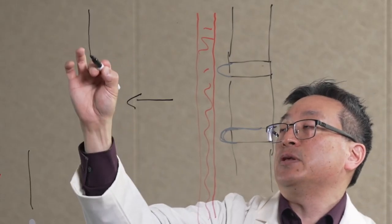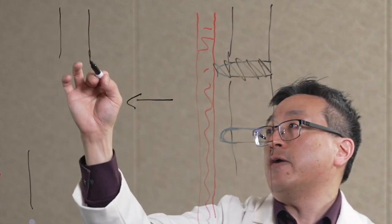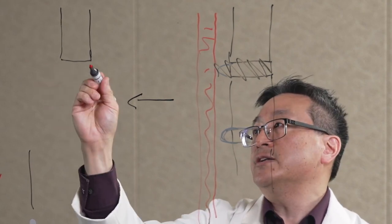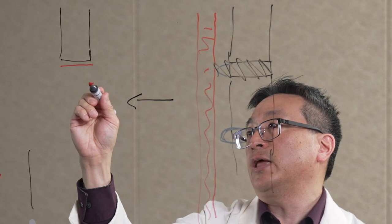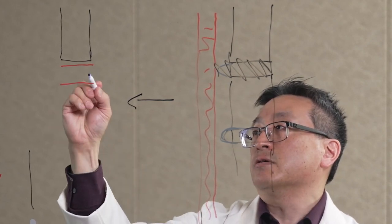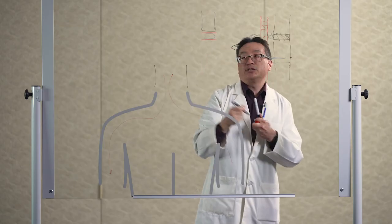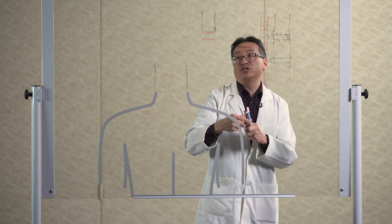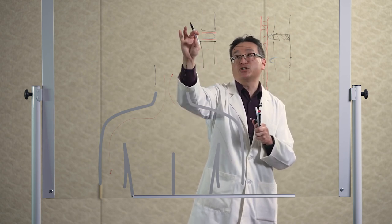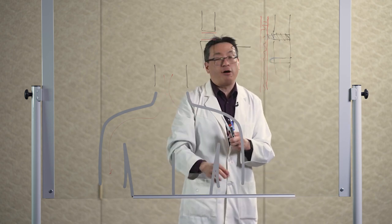That's simply by removing this offending disc material here and then placing a cervical disc replacement which often contains two metal plates and a piece of plastic here that allows that segment to continue its range of motion of the neck, as well as getting pressure off of the spinal cord so you no longer have the arm pain.